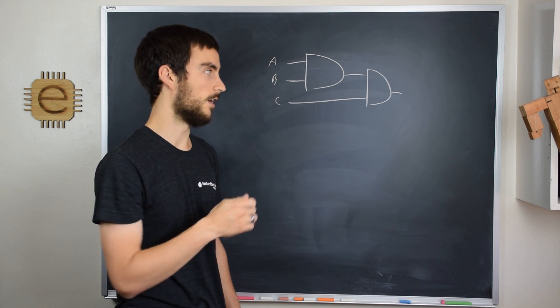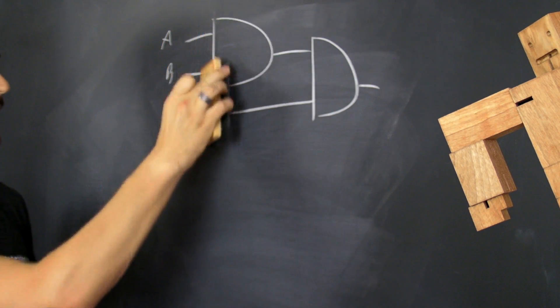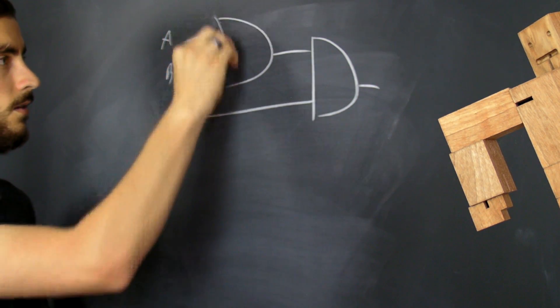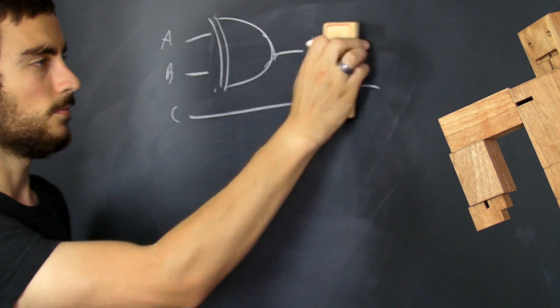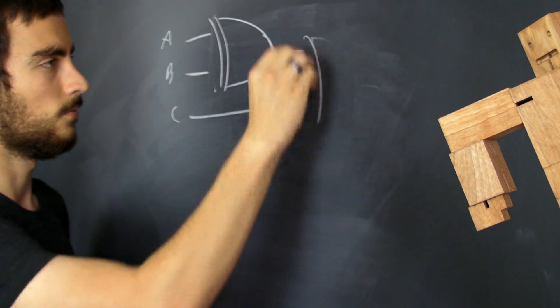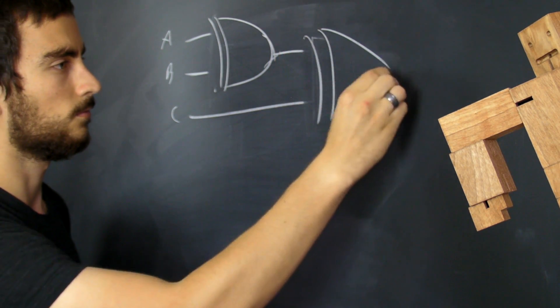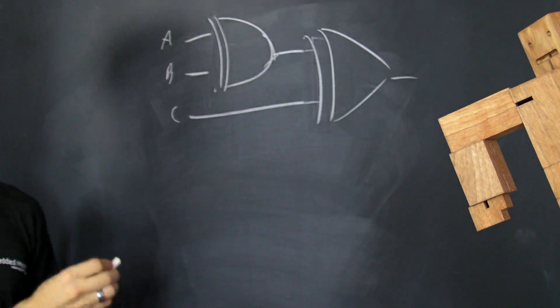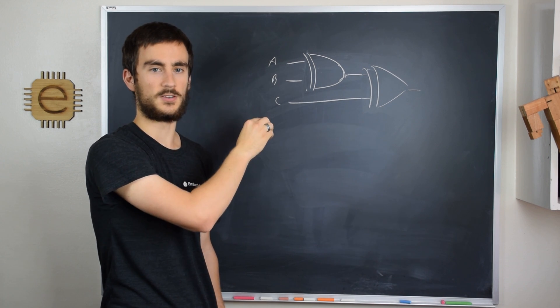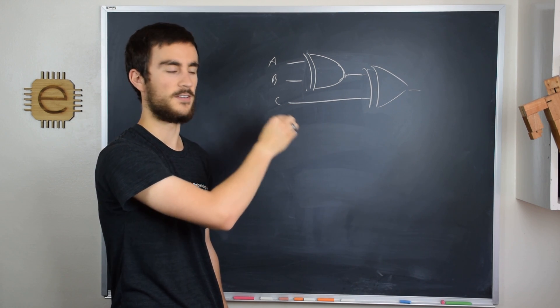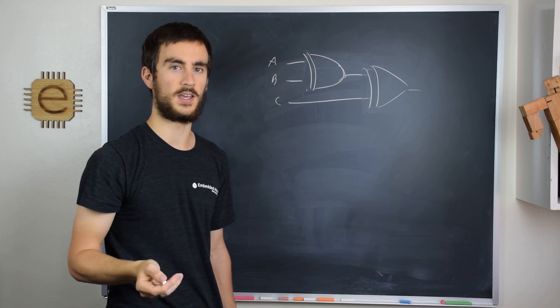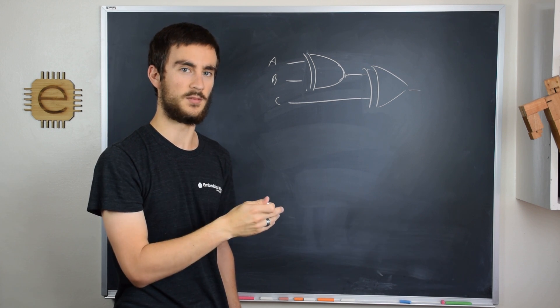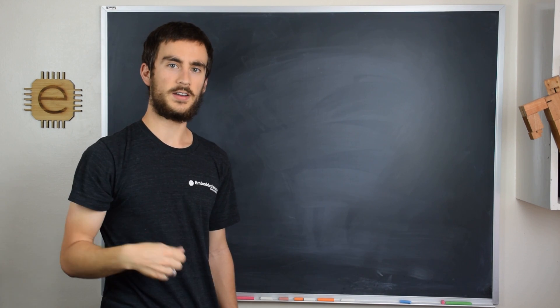That means that, for example, for a circuit like this, if A, B, or C is 1, then the output will be 1. And if A, B, and C are all 1, then the output will also be 1, because those are the only 2 cases where the number of 1s on the input are odd.